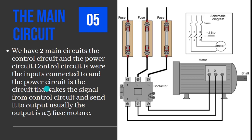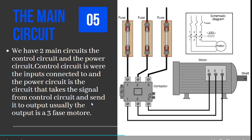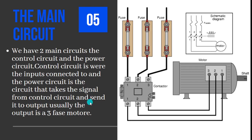The power circuit is the circuit that takes the signal from the control circuit and sends it to the output. Usually, the output is a three-phase motor. The power circuit takes the command from the control circuit and connects it to output devices like a motor or a specific machine used in industrial operations.